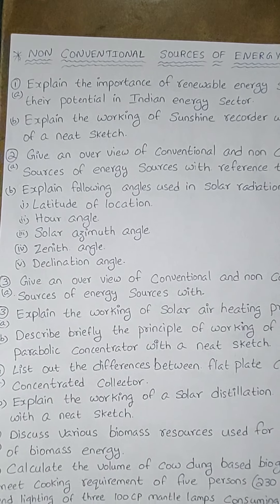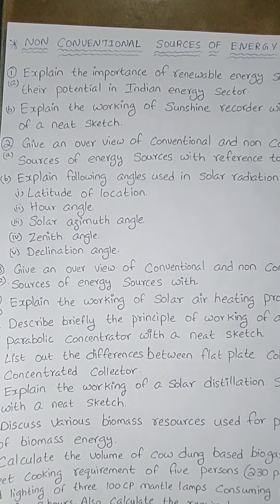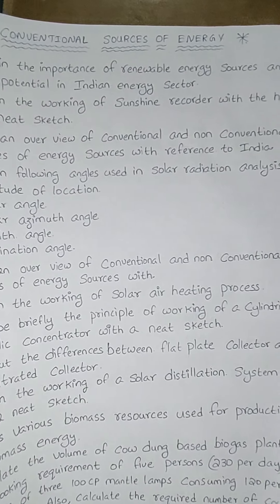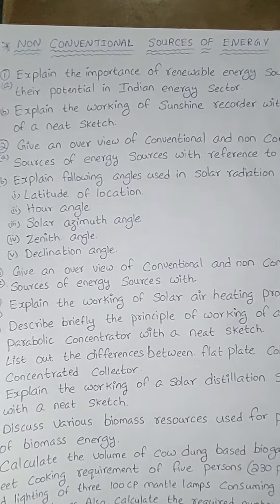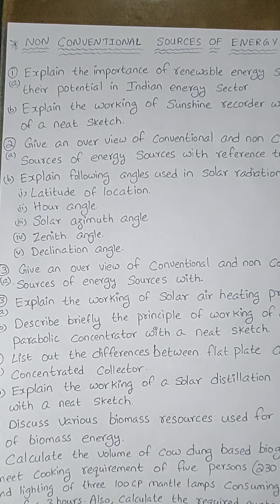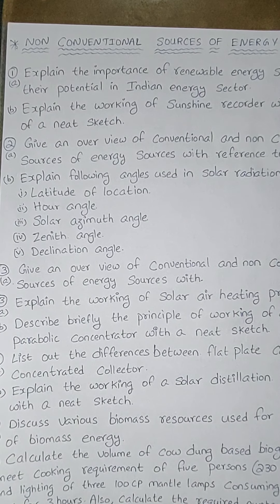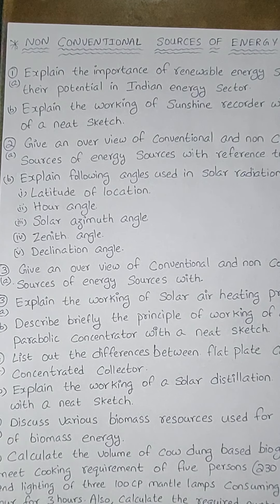For part B, explain the following angles used in solar radiation analysis: latitude of location, hour angle, solar azimuth angle, zenith angle, and declination angle. You have to write about all these angles. Each carries one mark, so one or two sentences is sufficient for each.